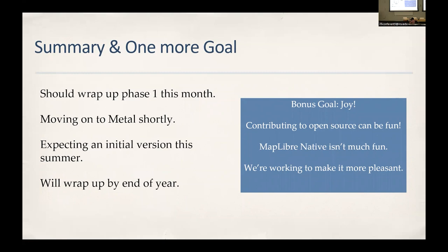One bonus goal: MapLibre Native should be fun to develop. The JavaScript version is pretty good — people can add new features flexibly. We want to make the native version more open so people can add their own functionality, explore AR, use it for true 3D. Making it easy to add new pieces so someone with a cool idea can get something basic working quickly is necessary for the long-term health of the project. We'll wrap up development by the end of the year.